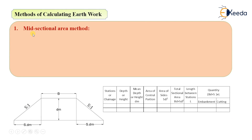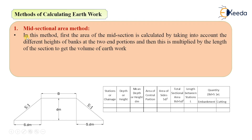The first method is mid-sectional area method. In this method, the area of the mid-section is calculated by taking into account the different heights of banks at the two end portions, and then this is multiplied by the length of the section to get the volume of earthwork. It is very simple — first the area of the mid-section is calculated, then it is multiplied by the length. Area into length gives volume.